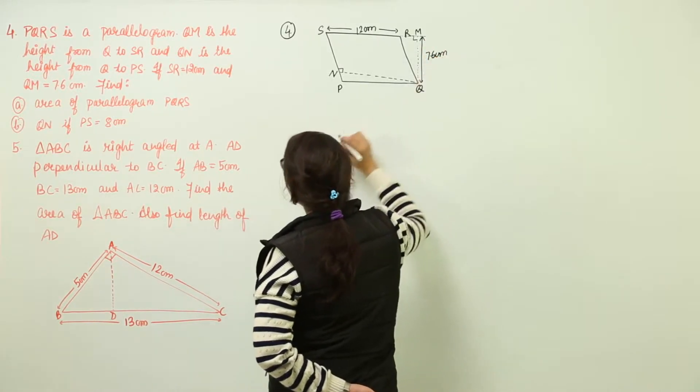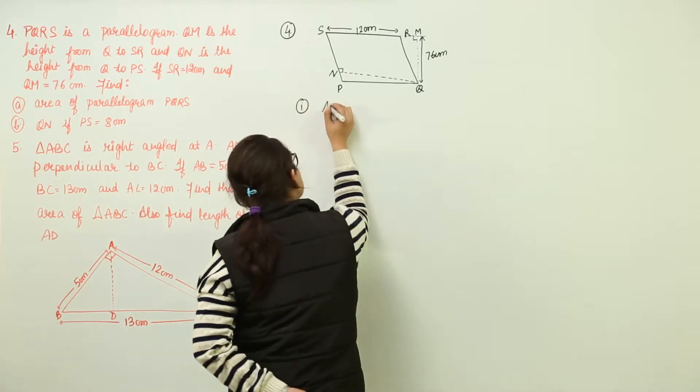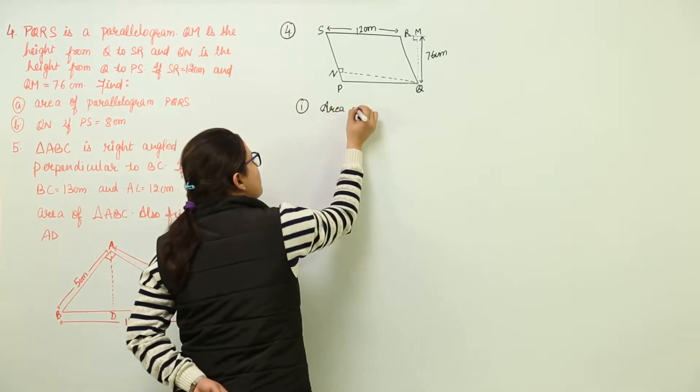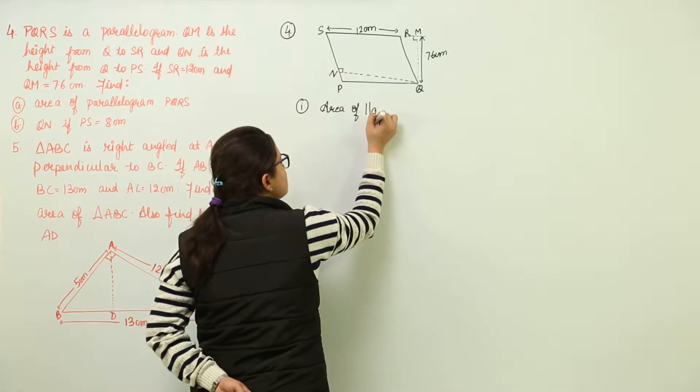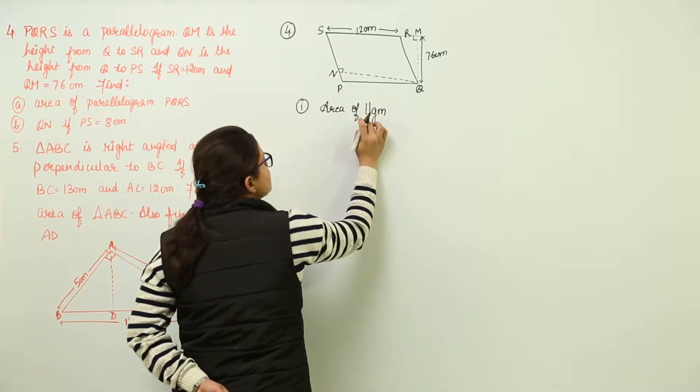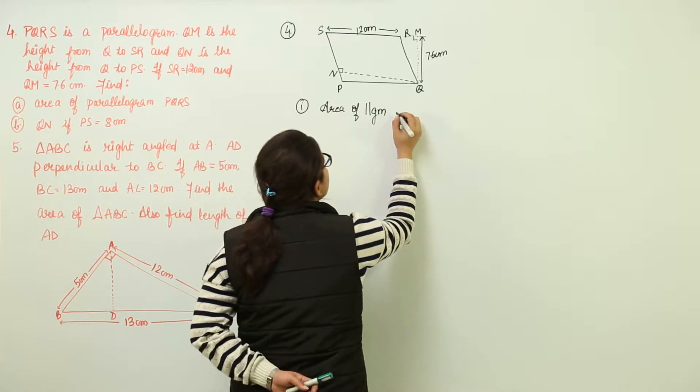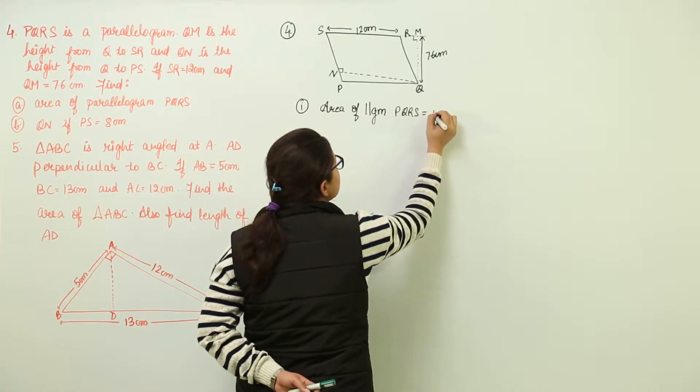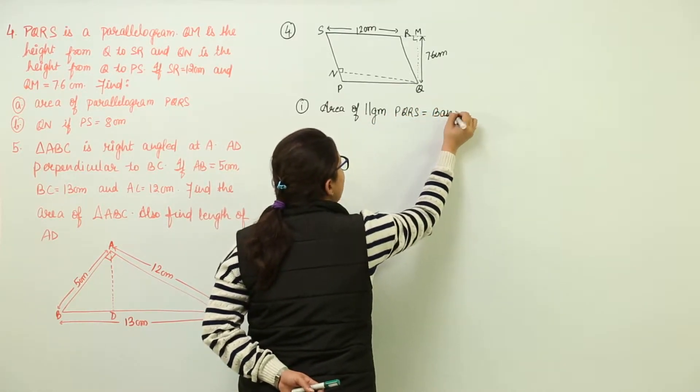We have to find out the area in the first part. So we know area of parallelogram, I am writing this in short form, this represents parallelogram. PQRS equal to base into height.